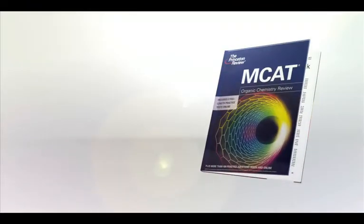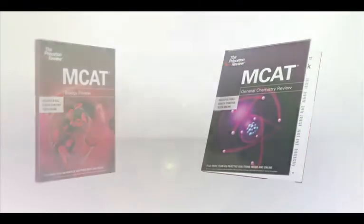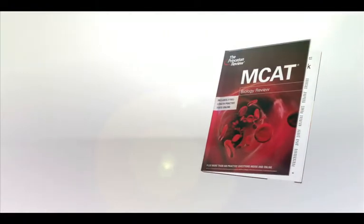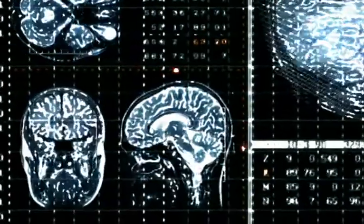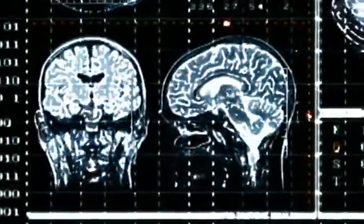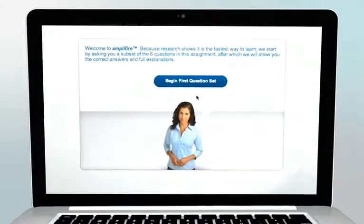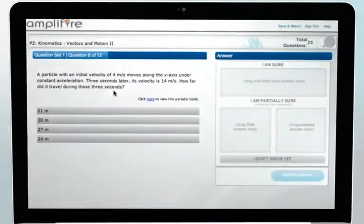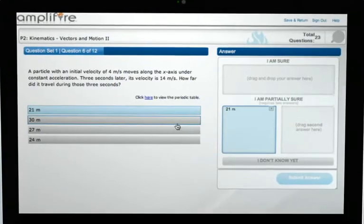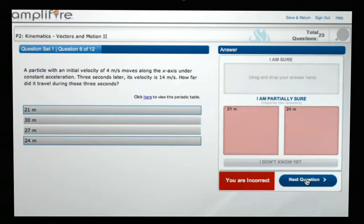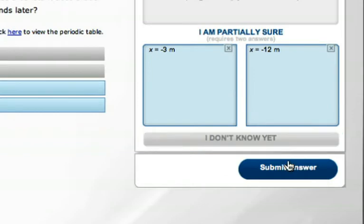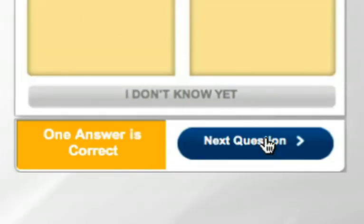to master the MCAT prep materials, including assignments in organic chemistry, general chemistry, biology, and physics. Here are a few examples of how Amplifier leverages brain science throughout its application. Amplifier begins each assignment with an initial set of questions, even though you might not have studied the material yet. Recent experiments demonstrate that the process of asking questions first actually triggers the brain to learn faster. This innovative approach jump-starts your brain and prepares you to learn.